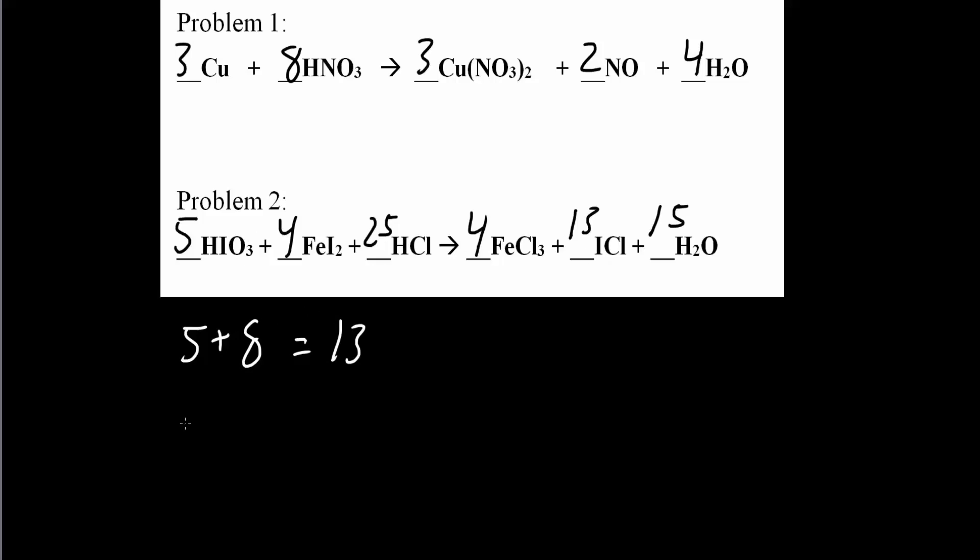Next O. So 5 times 3 is 15. 15 O's. How many O's do we have? 15 times 1. 15. Next Fe. So we have 4. And we have a 4 here. So Fe is balanced.